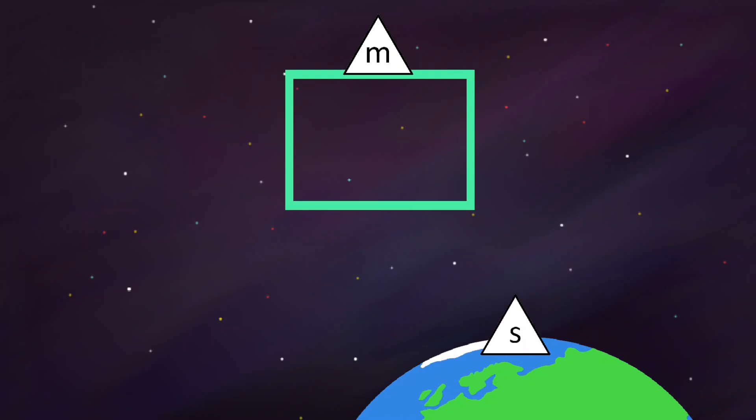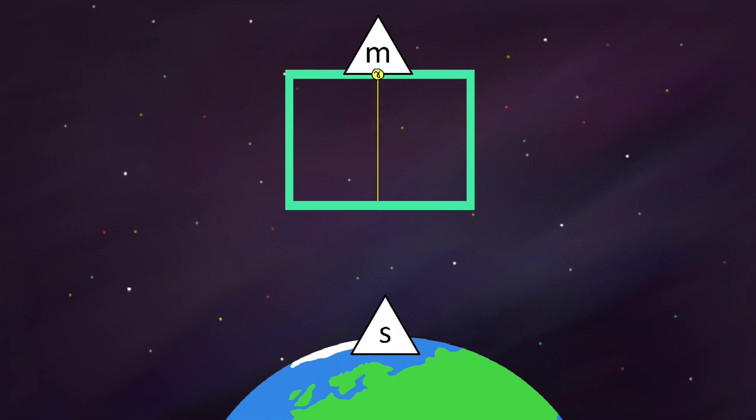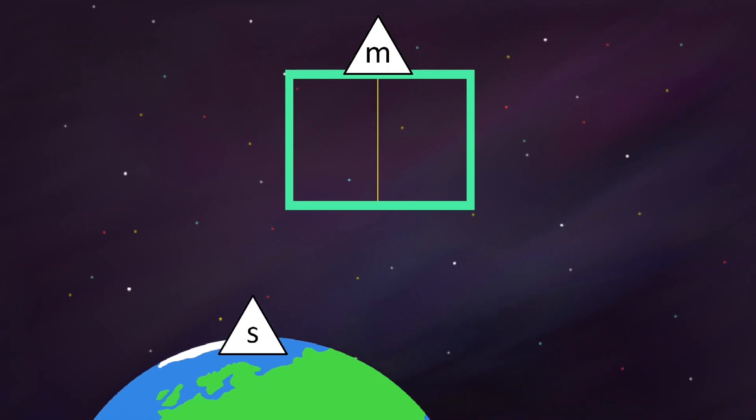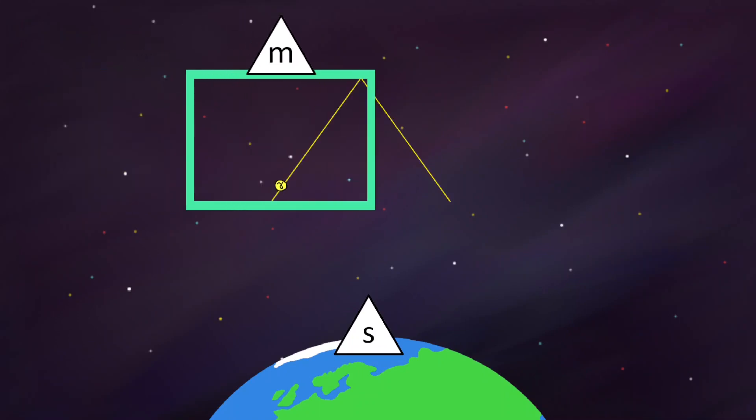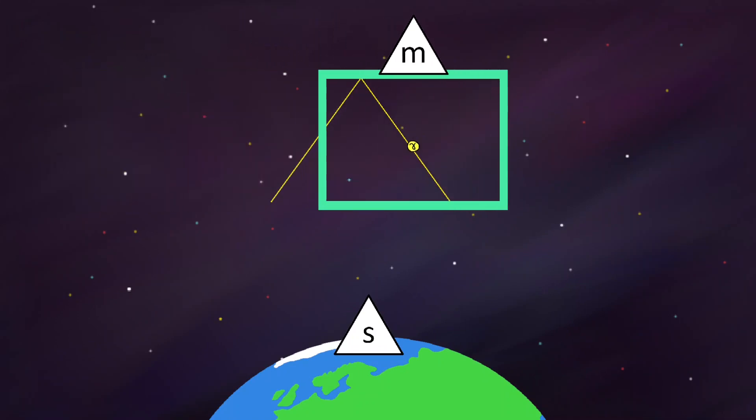From the mover's perspective, the path is just a straight line back and forth. From the stayer's perspective, though, the photon travels at an angle, so the path it takes is longer.